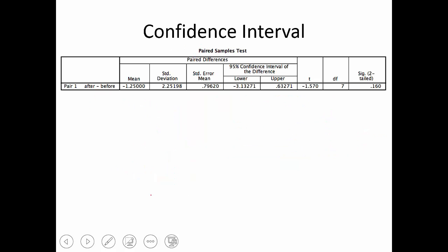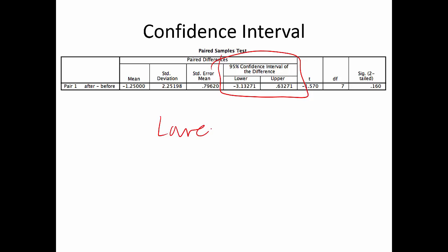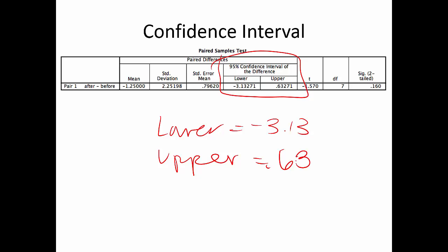Calculating the confidence interval: the lower bound is −3.13 — a reduction of about three bags of trash — and the upper actually crosses zero, reaching almost +1 bag of trash more. That's why we fail to reject. This is a 95% confidence interval because we used alpha = 0.05.